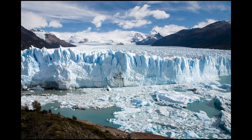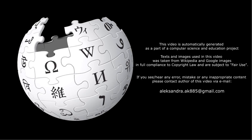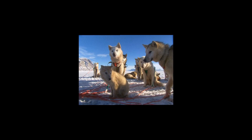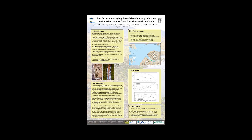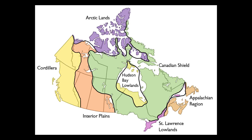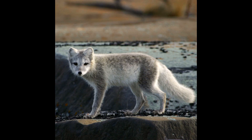The Arctic Lowlands have a small human population. The terrain is mostly ice, snow, and rock, and it is full of marshes, especially in the winter. Animals that live in the area include polar bears, char, arctic hares, and arctic foxes.